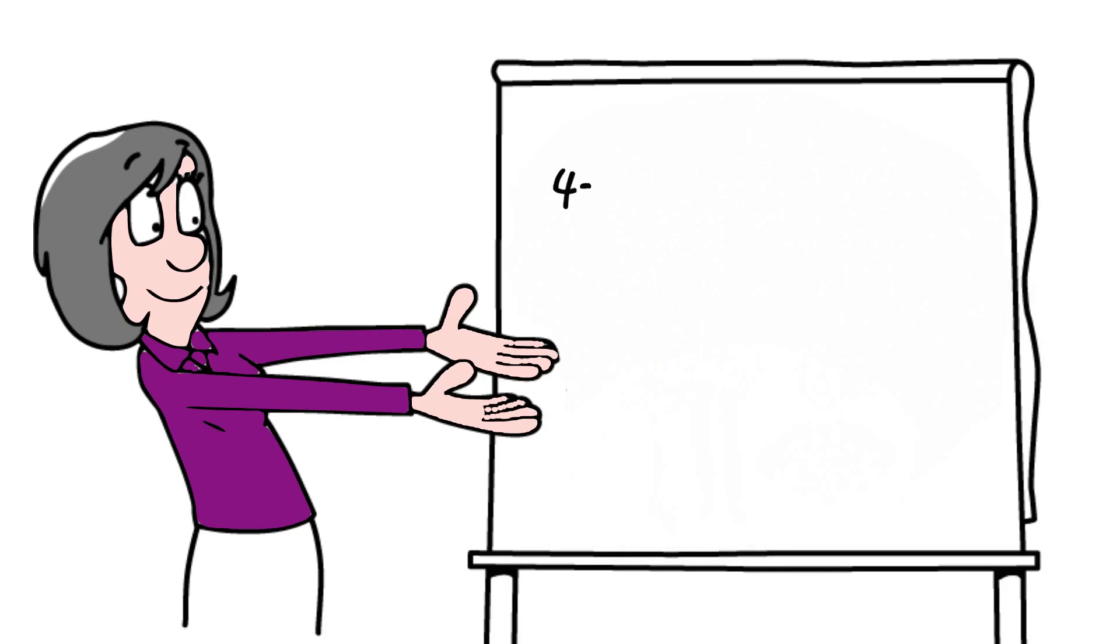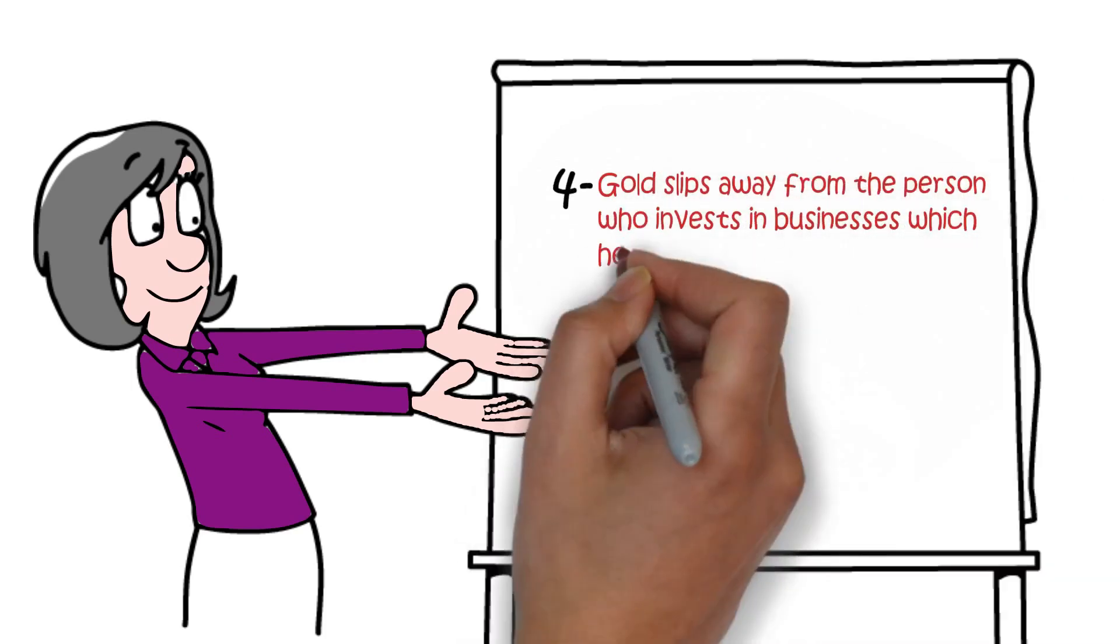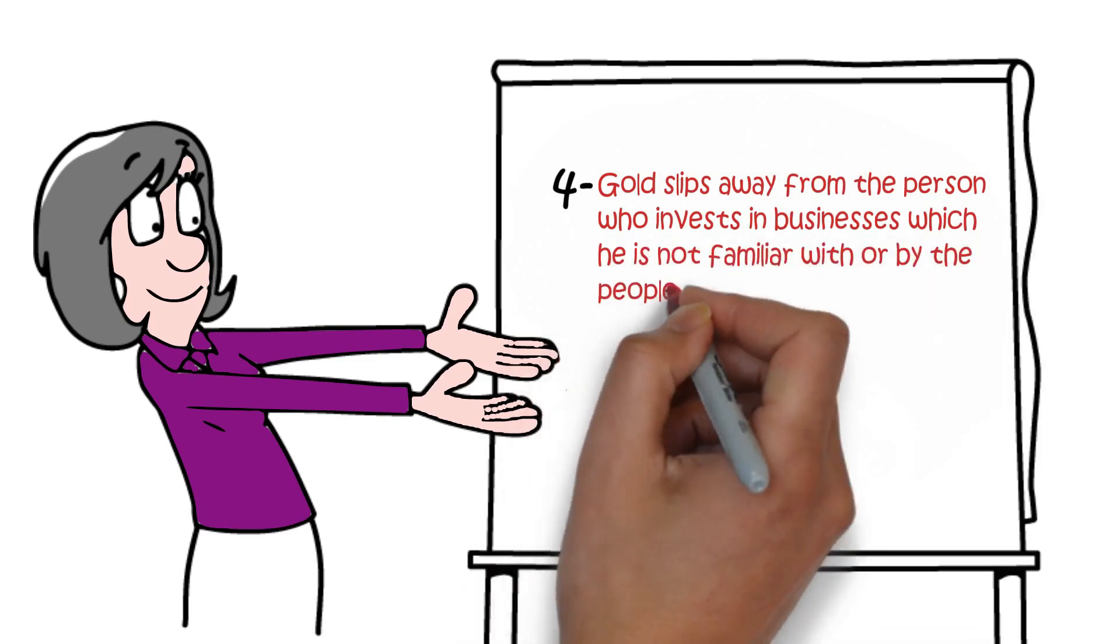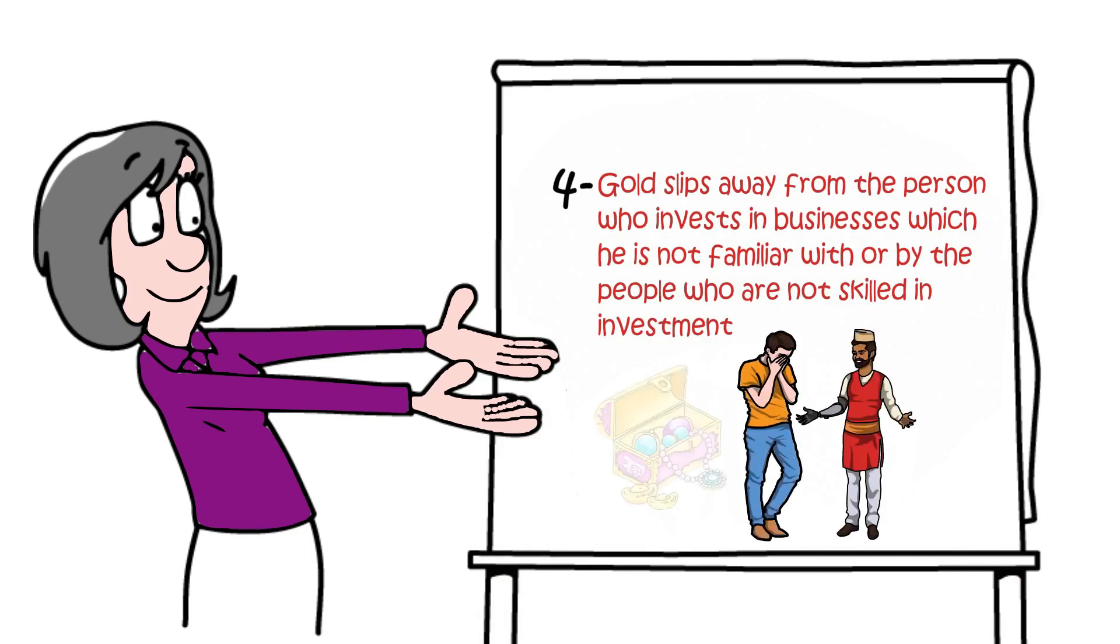Law number four, gold slips away from a person who invests in businesses which he is not familiar with, or by the people who are not skilled in investments. This was Arkad's first mistake when investing. He trusted a brickmaker's knowledge in the dealings of jewelry.